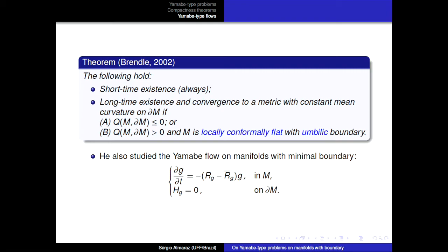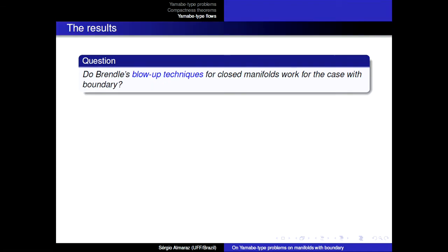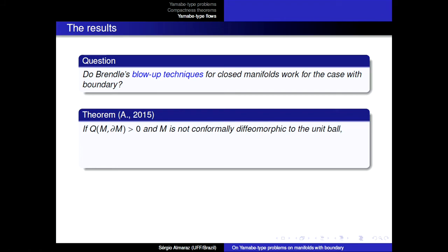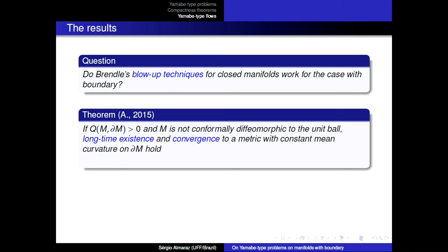There is also the Yamabe flow version for problem two — the Yamabe flow in the interior with minimal boundary condition on the boundary. This is the natural flow for the second problem. The natural question was whether Brendle's techniques for closed manifolds extend to manifolds with boundary, and the answer is yes. If the manifold is not diffeomorphic to the unit ball, one proves long-time existence and convergence of the flow to a scalar flat metric with constant mean curvature, using the positive mass theorem — specifically a version modeled on the half Euclidean space rather than full Euclidean space.